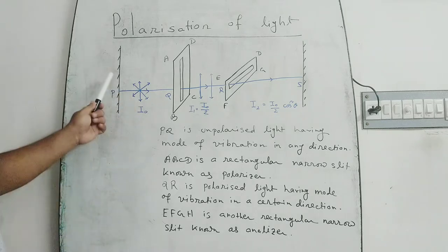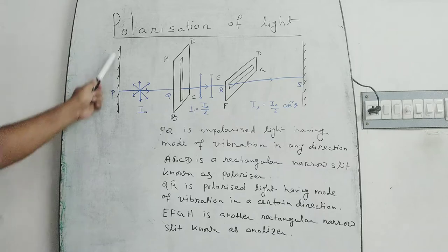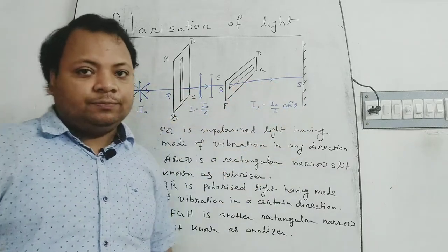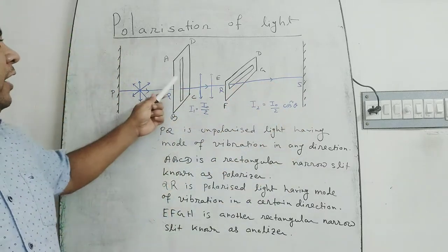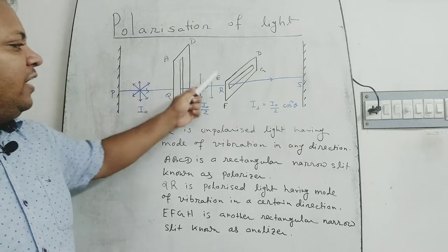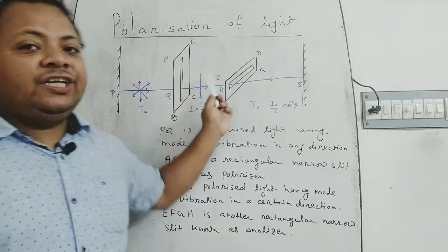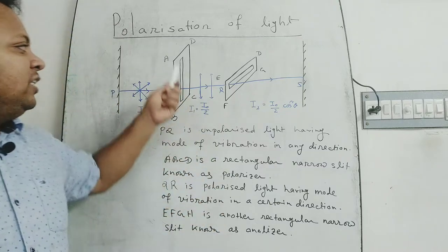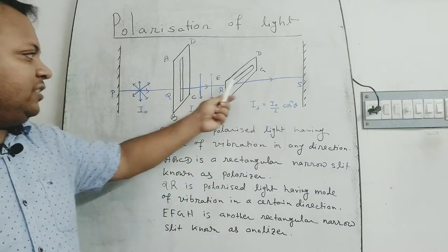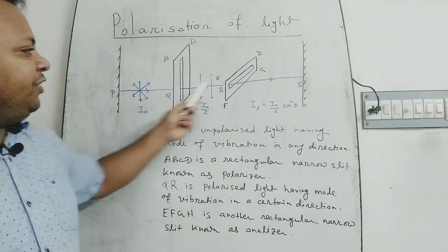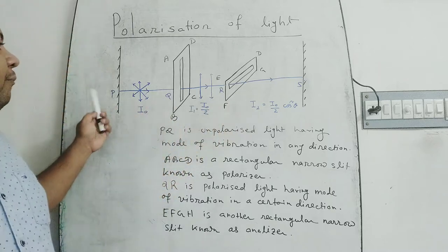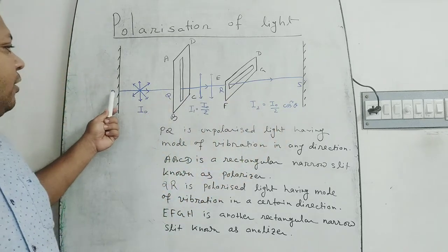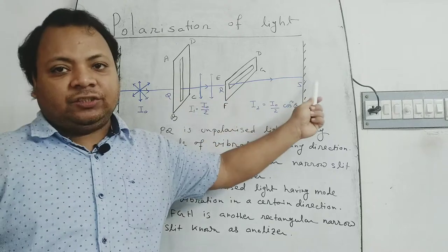Let us take an example. These are two rigid ones, and ABCD and EFGH are two rectangular cardboard or rectangular narrow slits through which a straight string PS is passed.